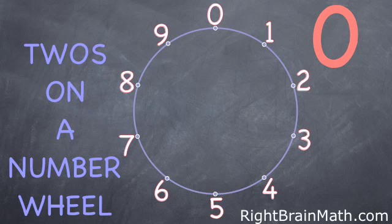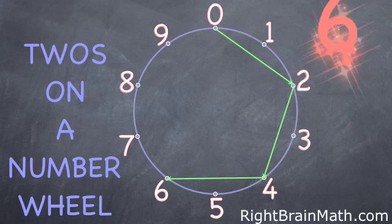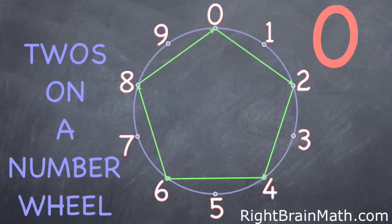The number wheel shows the ones digits as 2, 4, 6, 8, and back to zero, forming a five-sided pentagon.